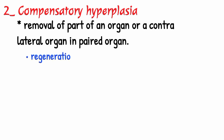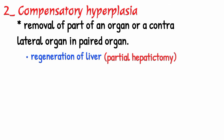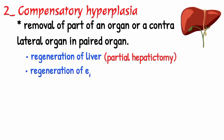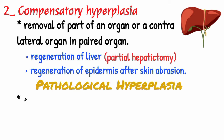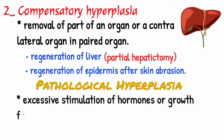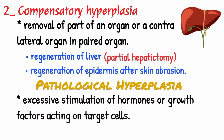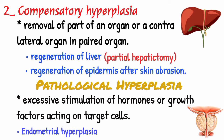For example, regeneration of liver following partial hepatic resection, and regeneration of epidermis after skin abrasion. Pathological hyperplasia is due to excessive stimulation of hormones or growth factors acting on target cells. Examples include endometrial hyperplasia following estrogen excess, and benign prostate hyperplasia.